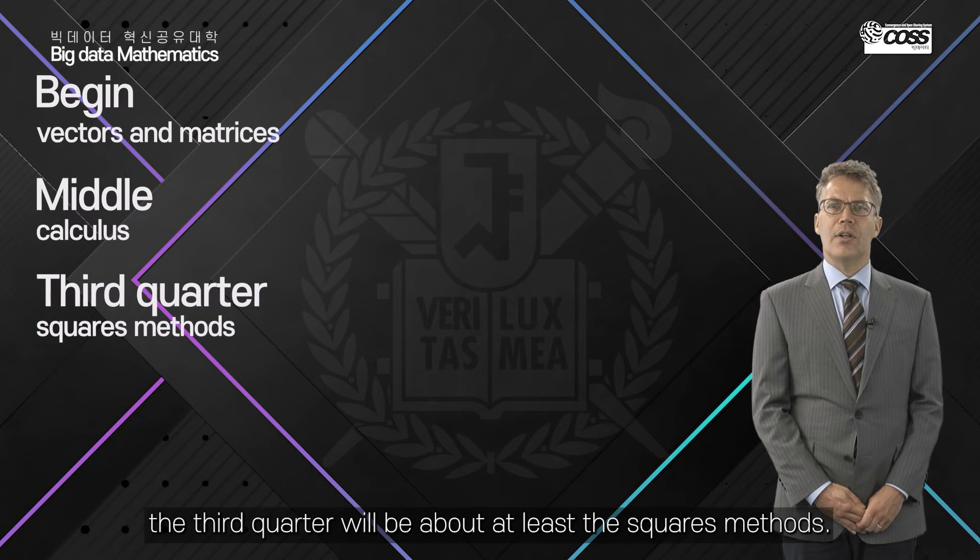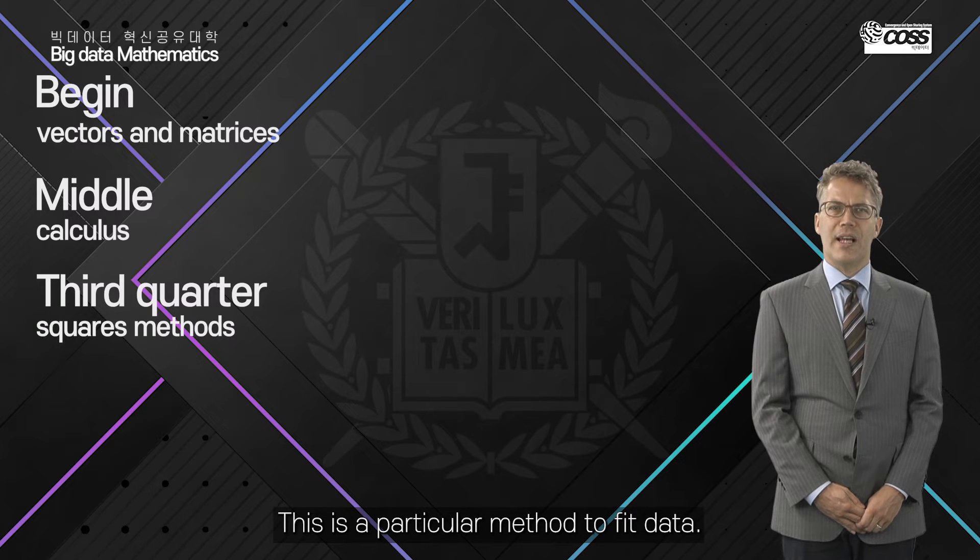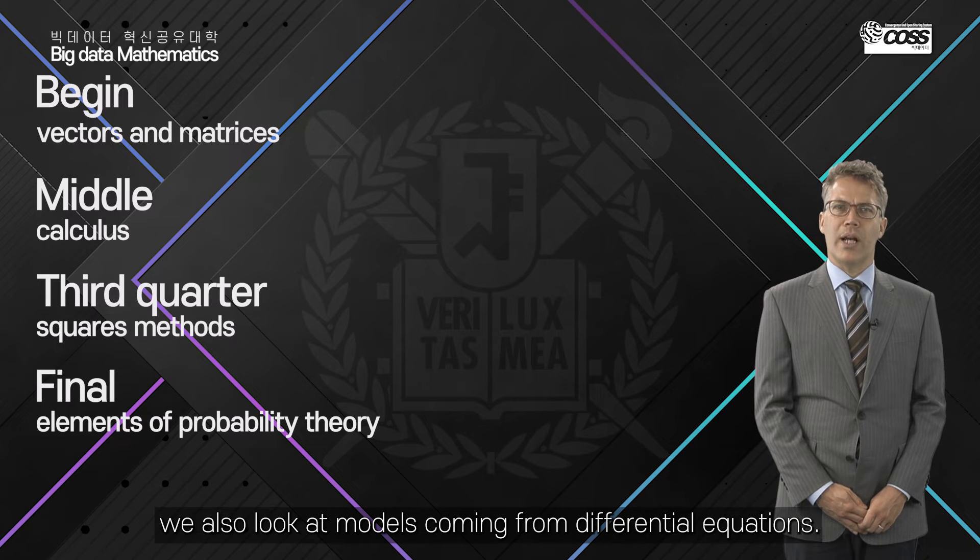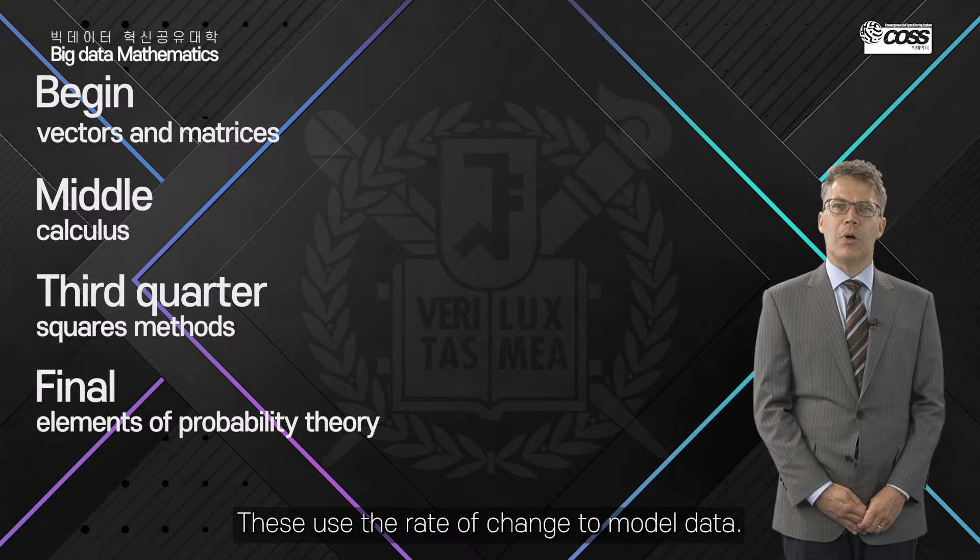After that the third quarter will be about the least squares method. This is a particular method to fit data. And finally we look at some elements of probability theory. Along the way we also look at models coming from differential equations. These use the rate of change to model data.